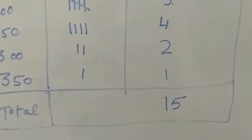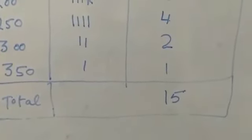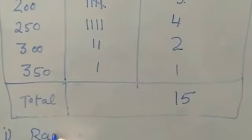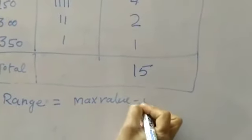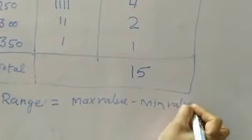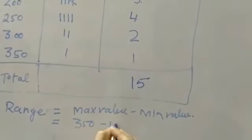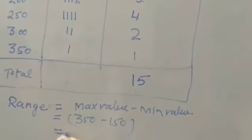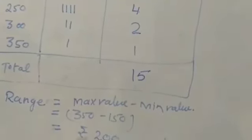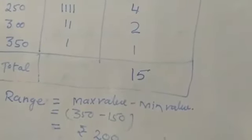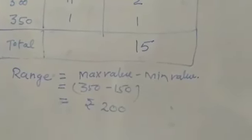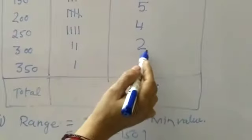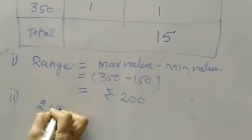Part 1: What is the range of wages in rupees? Range equals maximum value minus minimum value: 350 minus 150 equals rupees 200. Part 2: How many workers are getting rupees 300? There are two workers getting 300, so the answer is two workers.